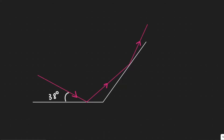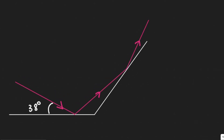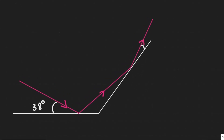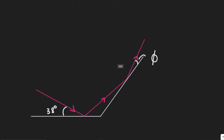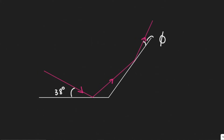In this problem, we are told two plane mirrors meet at a 135-degree angle as shown in the figure. If light rays strike one mirror at 38 degrees as shown, at what angle phi do they leave the second mirror? We're given this diagram and solving for angle phi. The light ray is 38 degrees relative to the first mirror, and the two mirrors meet at 135 degrees.